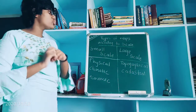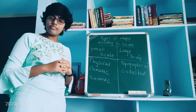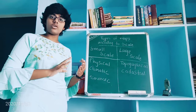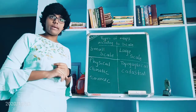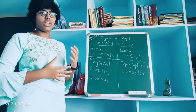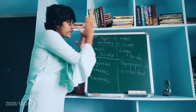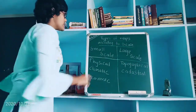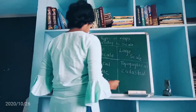So, types of maps according to scale. We know some types of maps like political, physical, economic, and climatic condition maps, among many others. But particularly according to scale, there are two types: one is small scale and the other one is large scale maps.